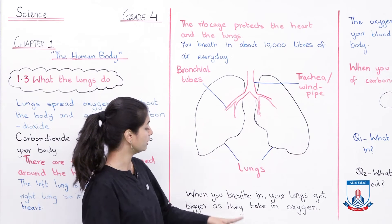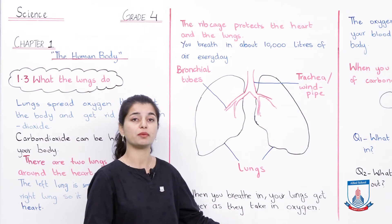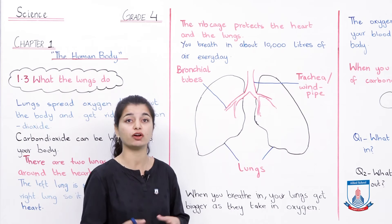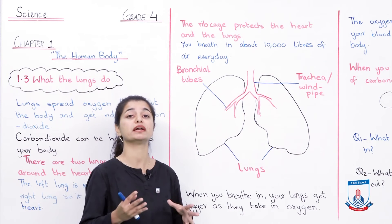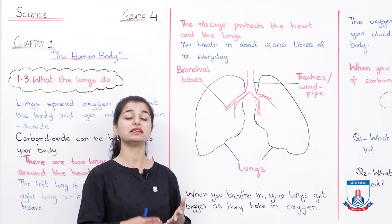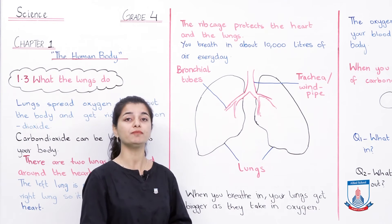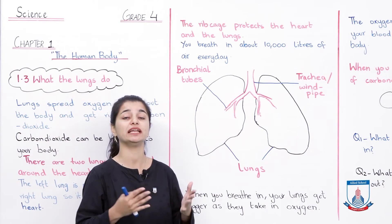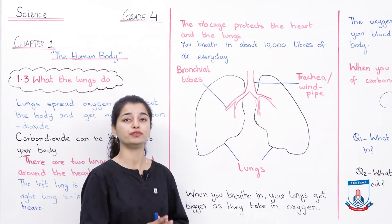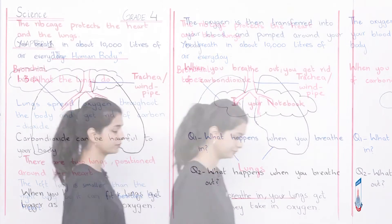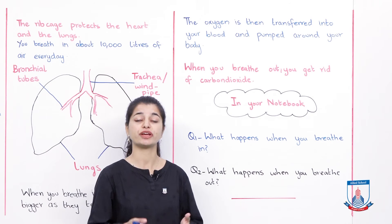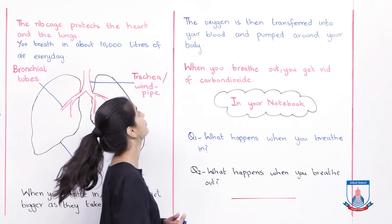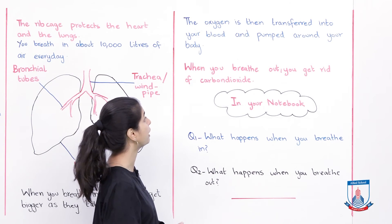When you breathe in, your lungs get bigger as they take in oxygen. When you inhale, the lungs expand and fill with air. Then, the oxygen is transferred into your blood and pumped around your body. So when the lungs have oxygen from the air, they inhale, swell up, and the oxygen passes into your blood, which then flows throughout your body.